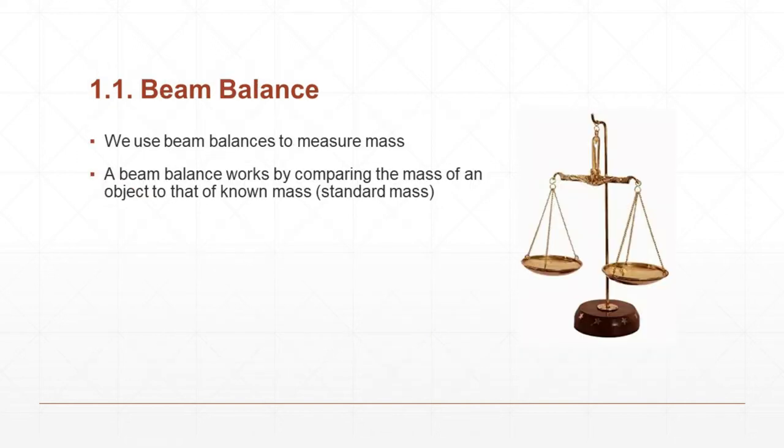Now, let us learn about measuring instruments. Two instruments we are going to learn. One is beam balance, another one is electronic balance. Beam balance. Look at the picture. You can see what is beam balance. We use beam balances to measure mass. A beam balance works by comparing the mass of an object to that of known mass called a standard mass.